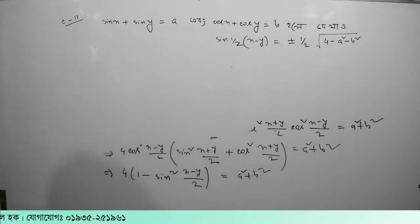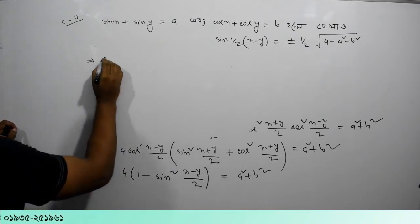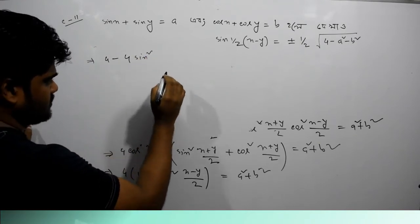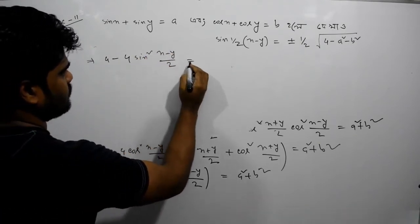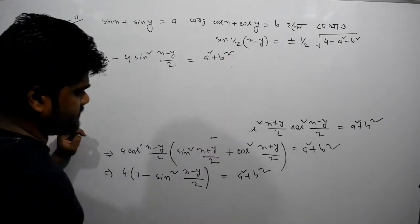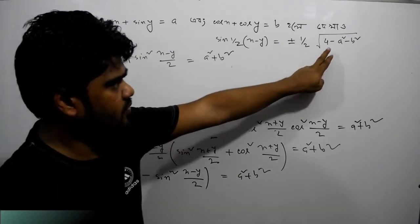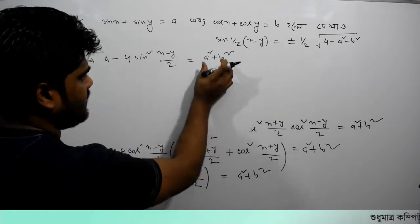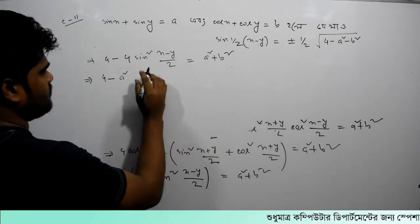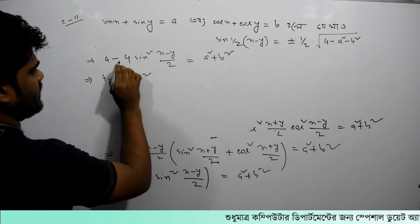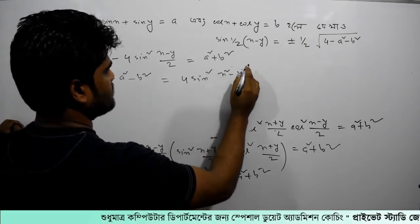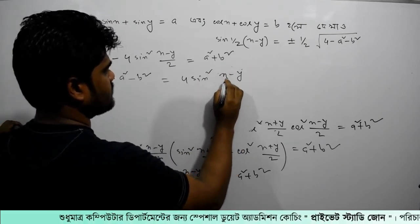Let's check this again. We get 4 minus 4 sin²((x-y)/2) equal to a² + b², which gives us 4 minus a² minus b² equal to 4 sin²((x-y)/2). So sin²((x-y)/2) equals (4 - a² - b²)/4.